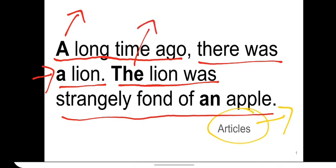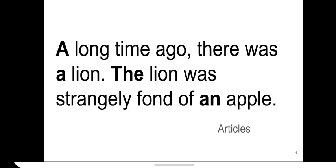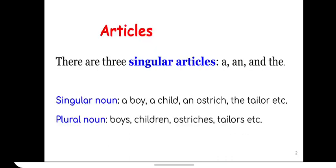So which lion? The lion which was there a long time ago was strangely fond of... Fond of means when you are in love with something. I am fond of reading books. He is fond of getting sick, right? An apple. So there was an apple, a strange apple, and the lion was in love with that apple. So you see that even in these short sentences, we have used article four times. And this simply shows how useful articles are and how often it appears in our day-to-day writing or speaking.